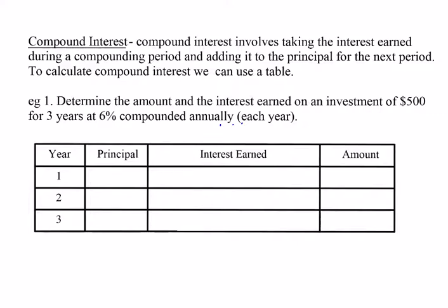We're going to take a look at this entire problem and see what we've got. For year one, we're going to start with $500 — that is our starting value, what we call our principal. The interest earned is just like before: I is equal to 500 times 0.06, which equals $30. The total amount is $530.